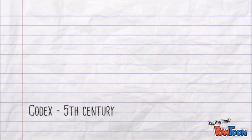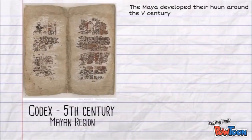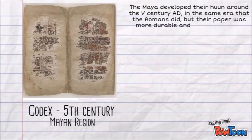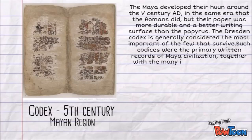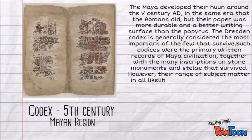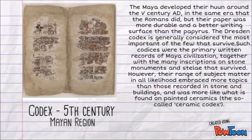There was the Codex in the Mayan region, developed from the 5th century. Maya codices are folding books from the pre-Columbian Maya civilization, written in Maya hieroglyphic scripts on Mesoamerican paper made from the inner bark of certain trees, the main being the wild fig tree. They were maintained by the Maya and contained many glyphs and paintings.